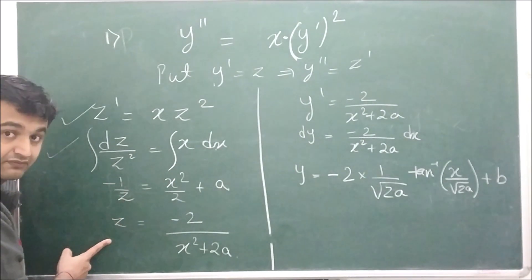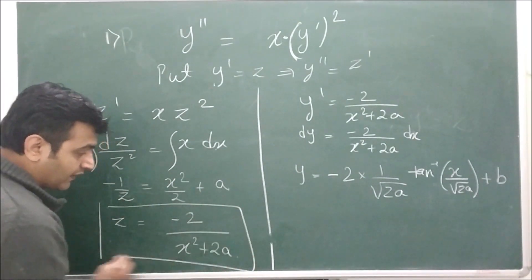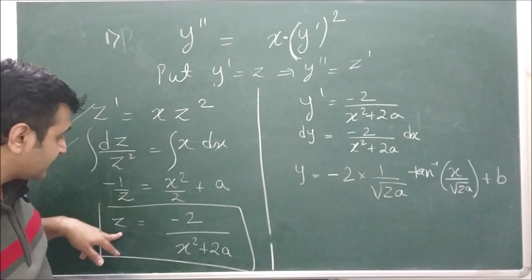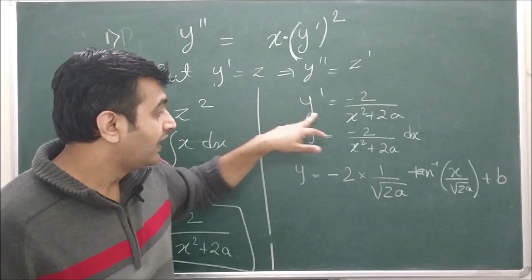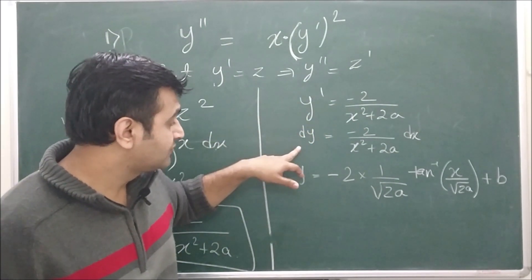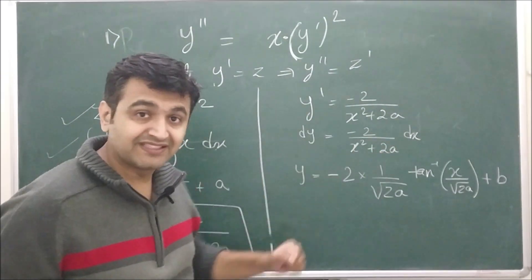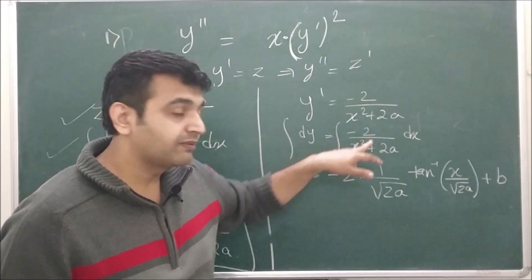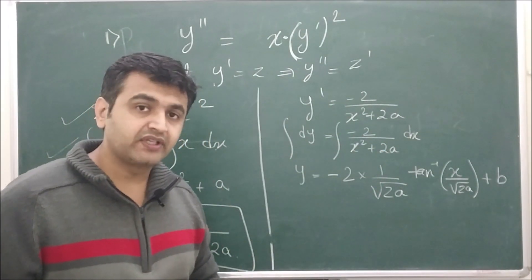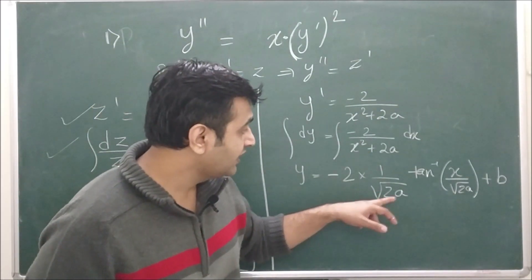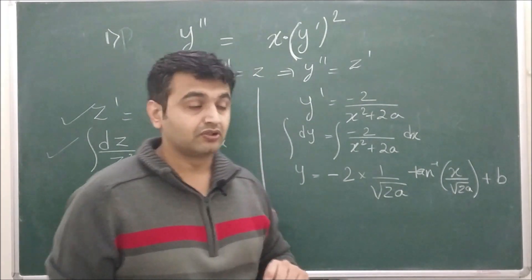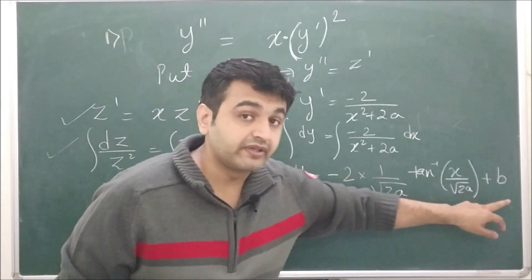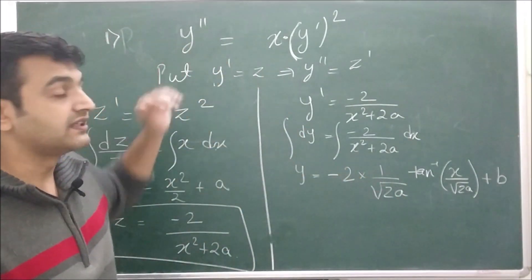We integrate both sides to get a result with constant of integration a. Since z equals y prime, we replace z by dy over dx and apply variable separable again. Integrating both sides, the left side involves 1 over (x squared plus a squared), which gives 1 over a times tan inverse of x over a, plus another constant. This is the general solution — second order, so two arbitrary constants, as expected.